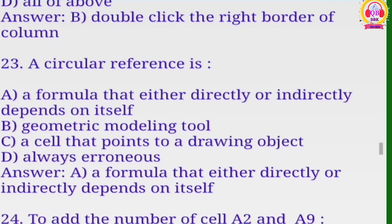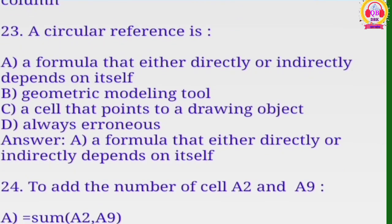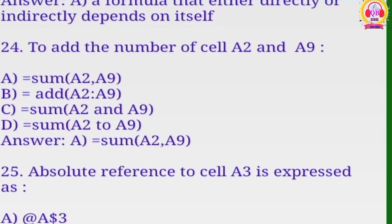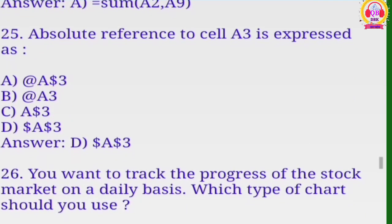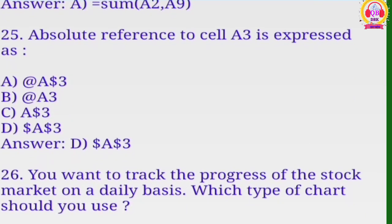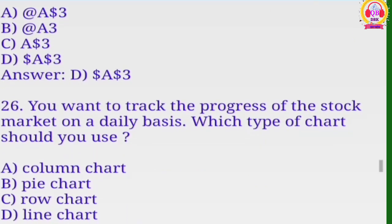A circular reference is what? ABCD, A is the correct option. A circular reference is a formula that either directly or indirectly depends on itself. To add the number of cell A2 and A9, ABCD, correct option is A, SUM A2 comma A9. Absolute reference to cell A3 is expressed as, ABCD, correct option is D.